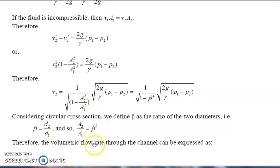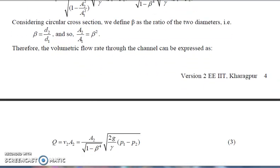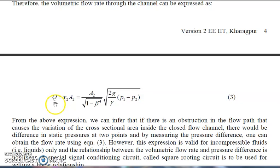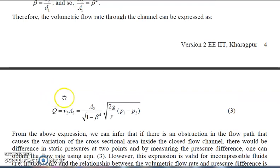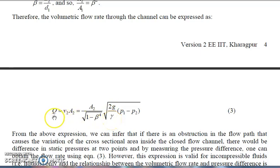The volumetric flow rate Q = V2 · A2. Substituting the values obtained using beta, this complete formula gives the volumetric flow rate. Note that area A2 is constant, beta is constant, g is constant, and gamma is constant. Therefore, the volumetric flow rate Q is directly proportional to the square root of the pressure difference (P1 - P2). This shows how we can measure flow by measuring the pressure difference at two different sections of a pipe.